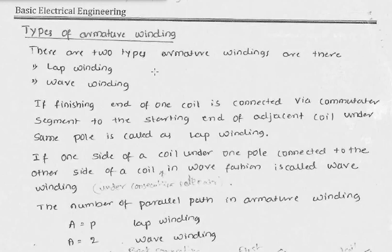Similarly, if we want 4 parallel paths from 100 conductors, we make 25 conductors in series and connect 4 such groups in parallel — giving 4 parallel paths. If we use lap winding, the number of parallel paths A equals P, where P is the number of poles. If we use wave winding, the number of parallel paths is fixed and equal to 2.